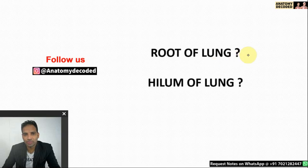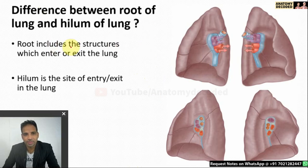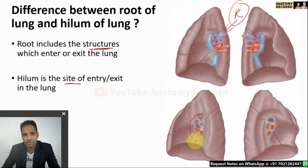Now let us understand the two terms: root of the lung and hilum of the lung. The root refers to the structures which enter or leave the lung. The hilum is the site on the lung where these structures enter or exit. Root includes the structures themselves; hilum is the site of entry and exit. This difference is important to know.